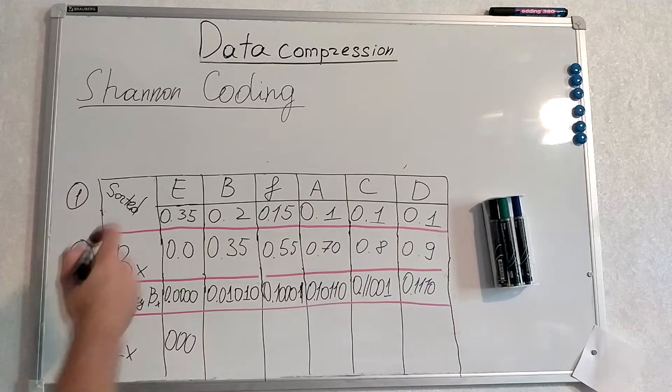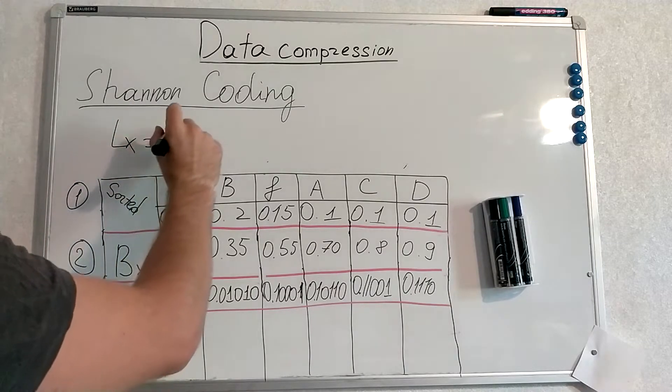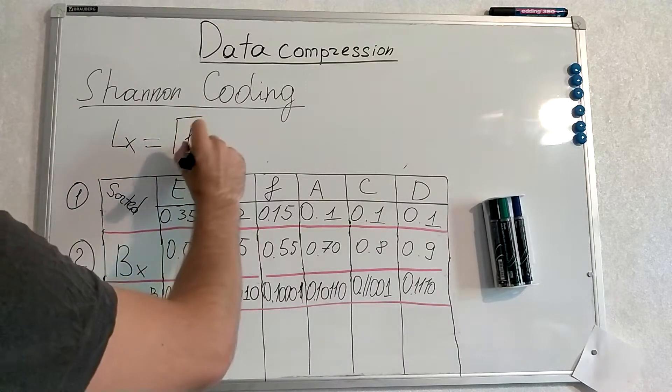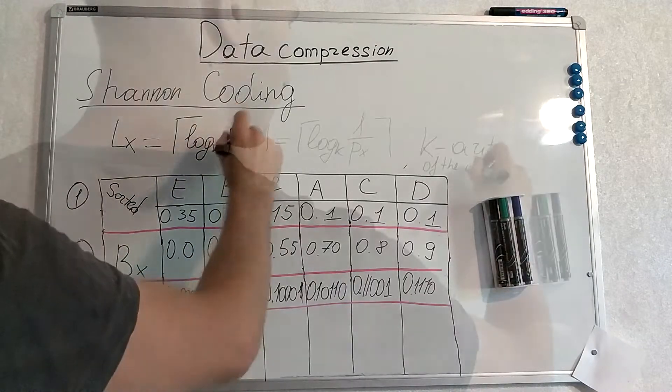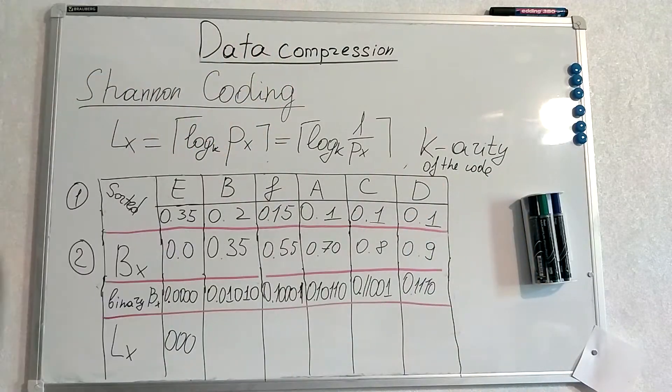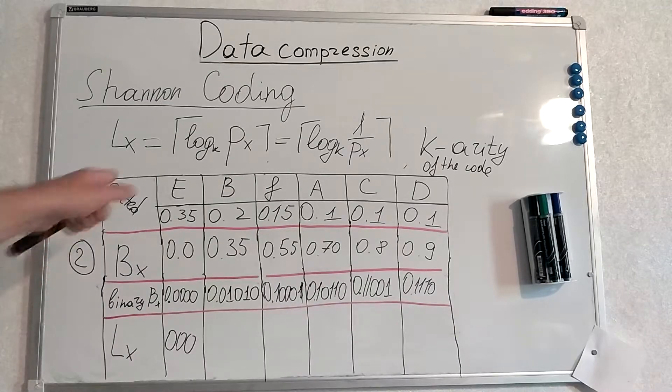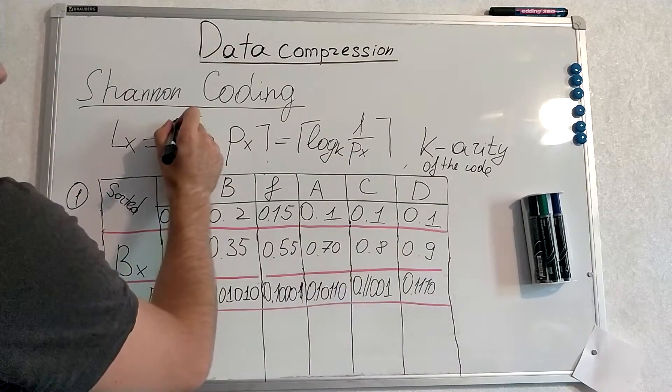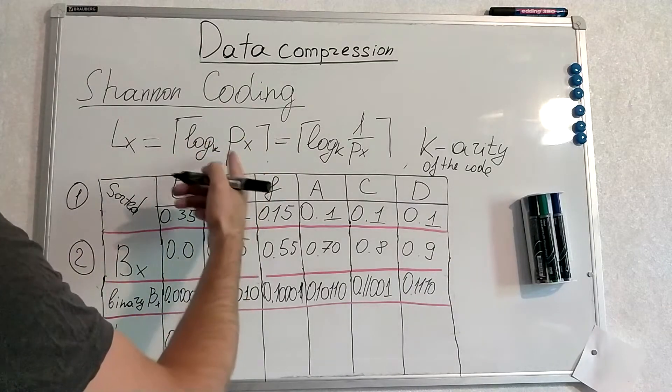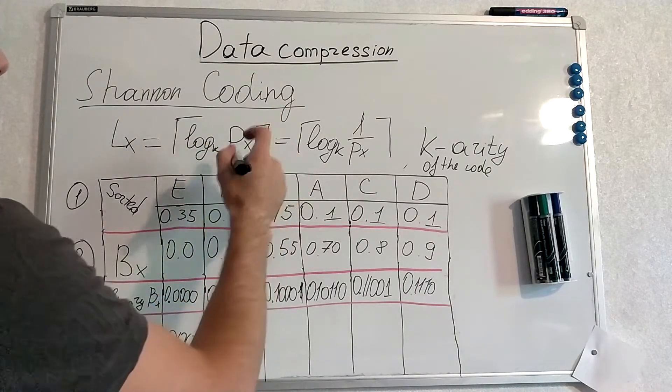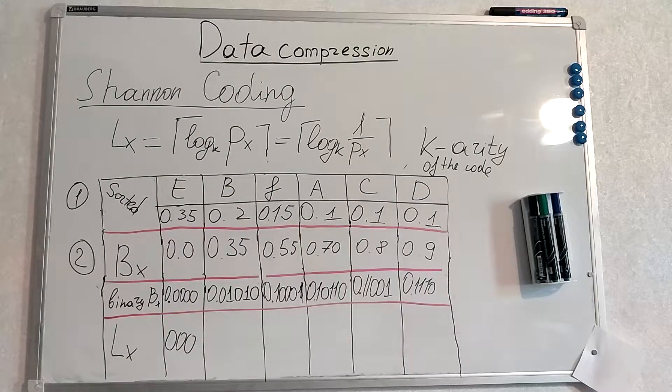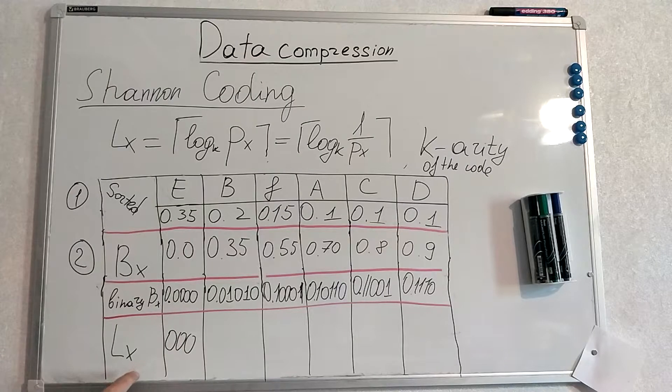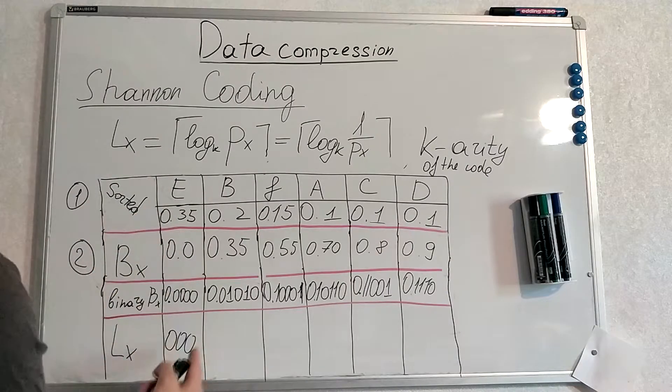So the formula for Lx is the following. This is the formula for Lx. It's pretty simple. This sign means ceiling. We round it to the next integer. And at the end for each symbol we produce separate Lx.